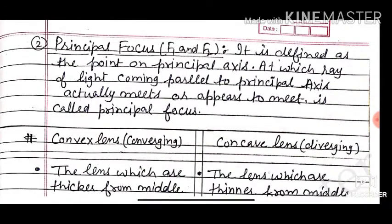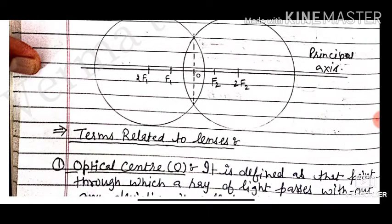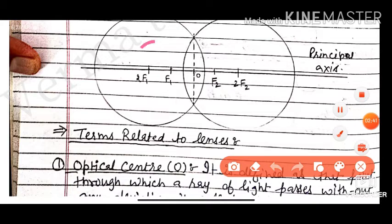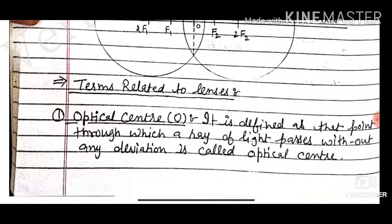Principal focus: there are two types — F1 and F2. It is defined as the point on the principal axis at which rays of light coming parallel to the principal axis actually meet, or appear to meet, and is called the principal focus. The center of curvature C1 and C2 are named as 2F1 and 2F2 respectively — this is the key difference between a lens and a mirror.